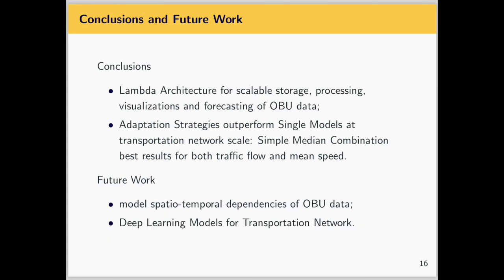To conclude: we presented the Lambda architecture and how to employ it for scalable storage, processing, and visualization of OBU data. We then performed short-term traffic forecasting of traffic flow and mean speed, showing that adaptation strategies outperform single models at the transportation network scale, with the simple median combination strategy yielding the best results for both predicted variables. Future work, already underway, involves modeling spatiotemporal dependencies in OBU data using deep learning techniques — specifically LSTM and CNN to capture traffic non-linearities.